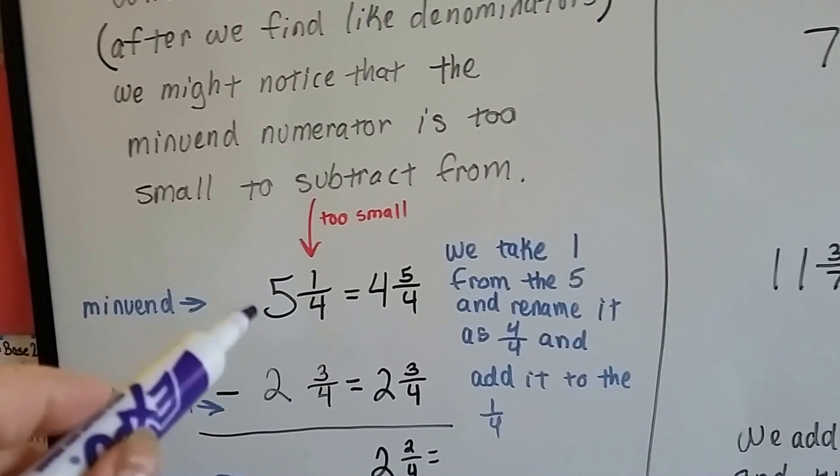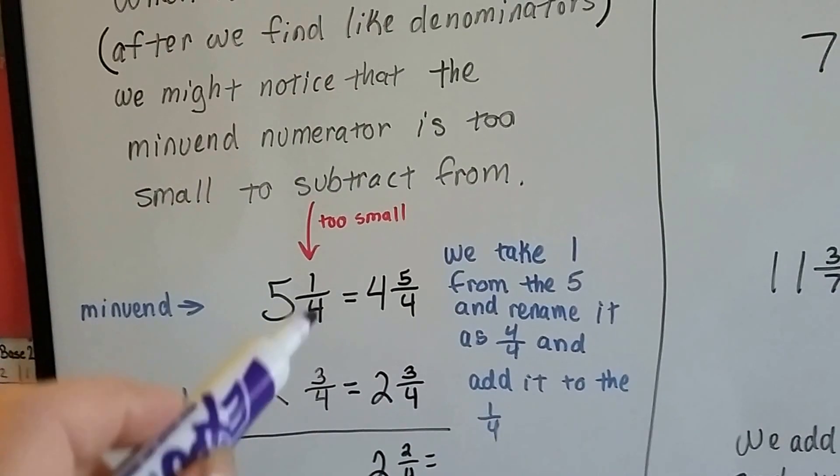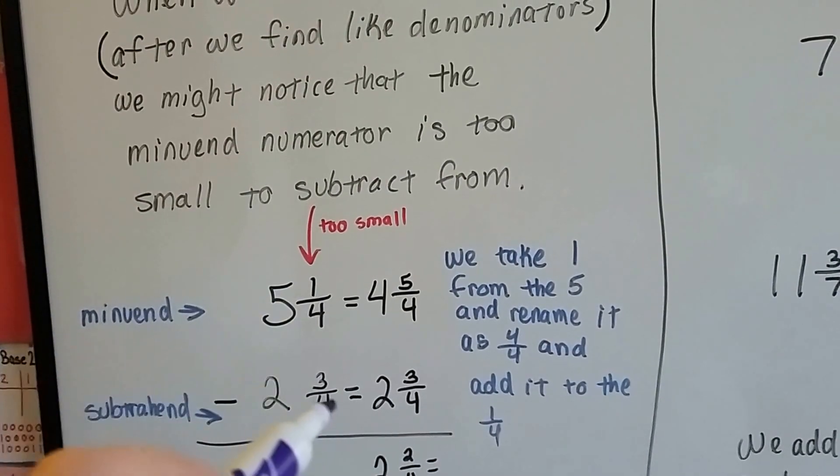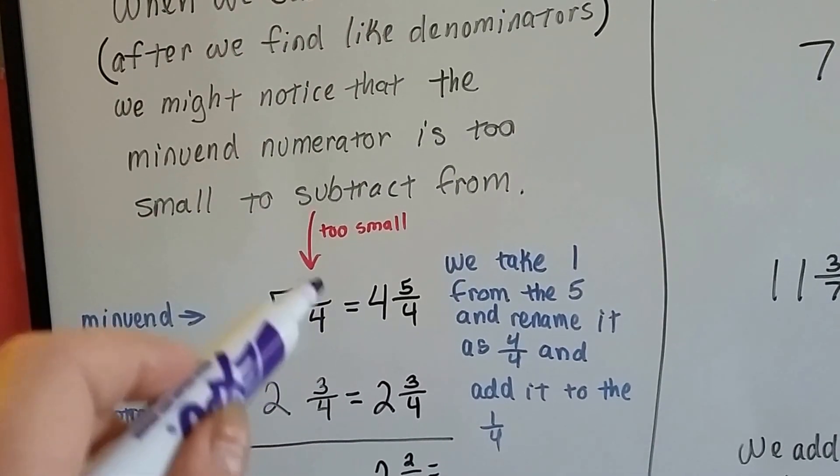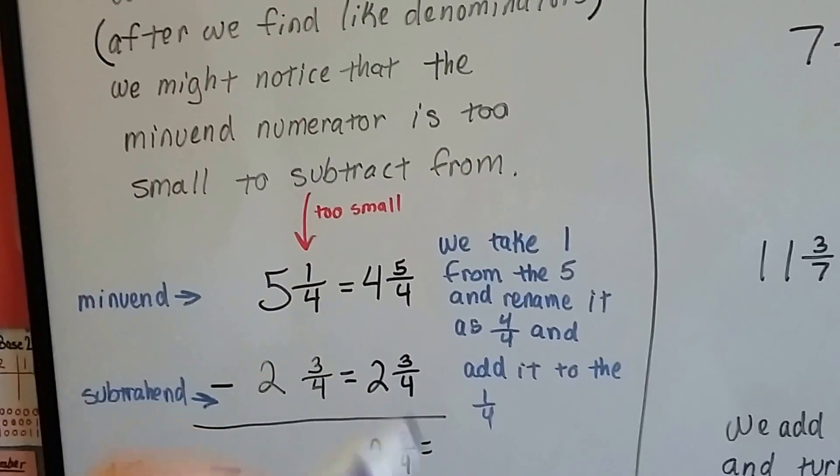So what we do is we take 1 from the 5, we rename it as 4 fourths because that's the denominator that's being used, and we add the 4 fourths to this 1 fourth. Now it's 5 fourths. Now we can subtract.